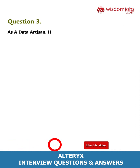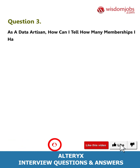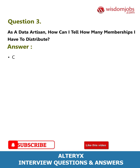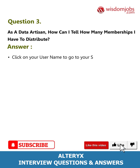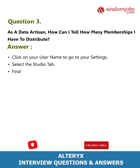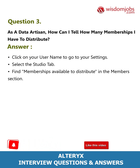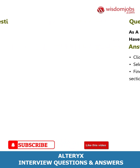Question 3: As a data artisan, how can I tell how many memberships I have to distribute? Answer: Click on your username to go to your settings, select the Studio tab, and find memberships available to distribute in the Members section.